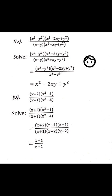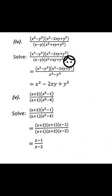Part 4: (x³-y³)(x²-2xy+y²) divided by (x-y)(x²+xy+y²). The denominator factors as (x-y)(x²+xy+y²), and after simplification the result is (x²-2xy+y²).